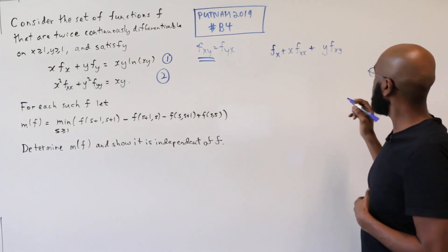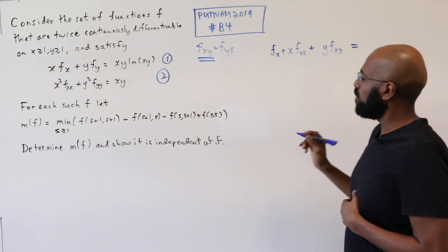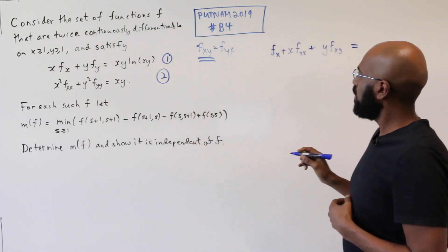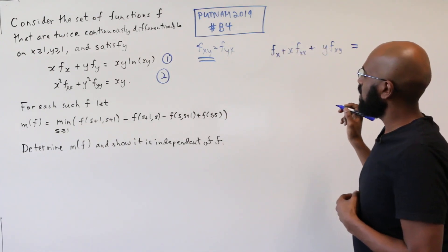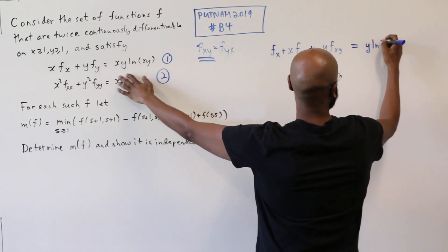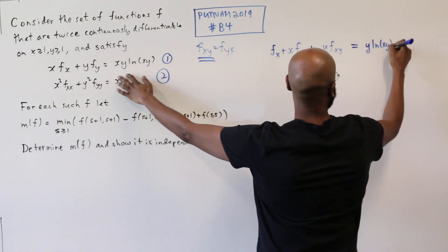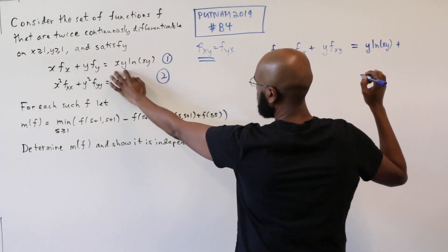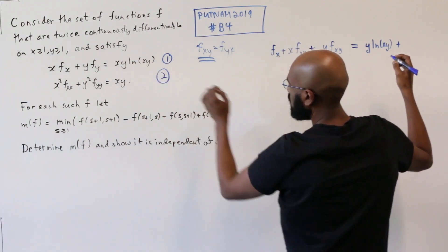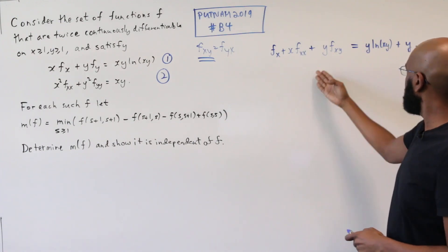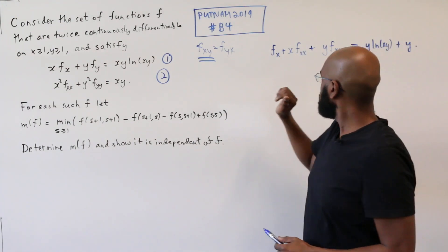Okay, so we have y fxy, and that's going to equal the derivative of this side with respect to x, which is going to involve a product rule as well. And that'll be y ln(xy) plus 1 over xy times xy times y, which is y. Okay, so we get an equation like this, when we differentiate with respect to x.